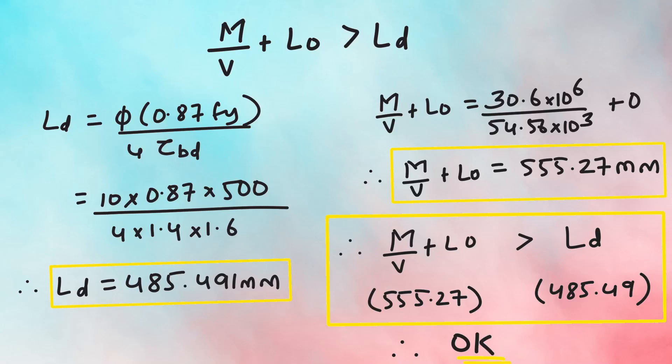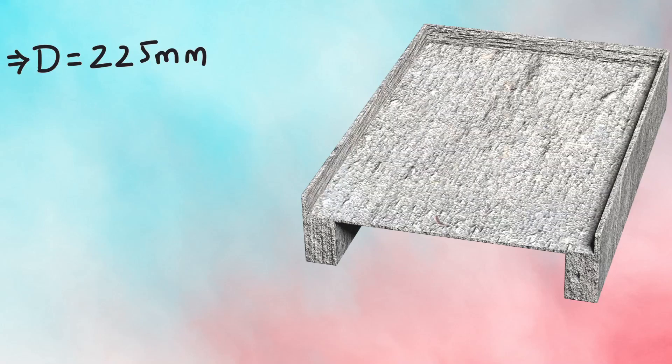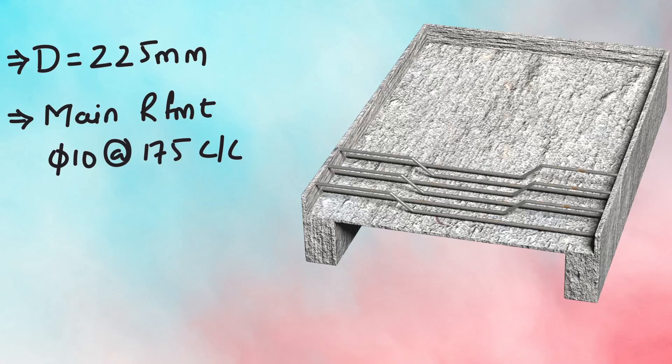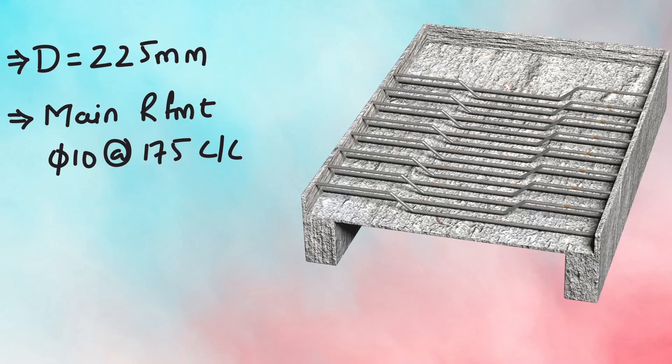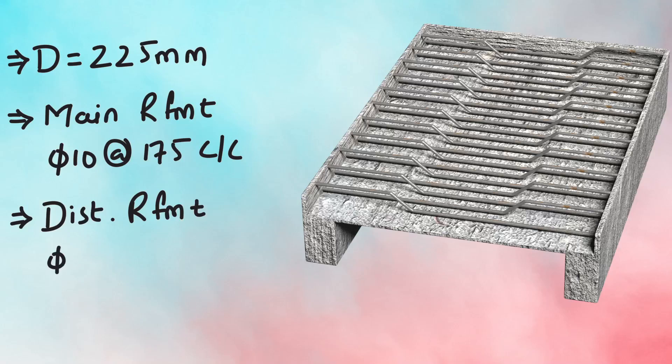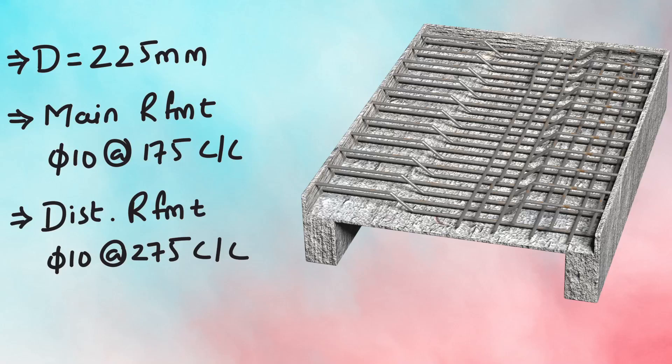So our slab is designed and the final step which remains is detailing the slab. As per calculation the total depth of slab is 225 mm. The main reinforcement is tor 10 at 175 mm center to center and is laid along the shorter span of the slab which is alternately bent up. Distribution steel is tor 10 at 275 mm center to center which is laid along the longer span of the slab and it is also alternately bent up since this is a two-way slab.